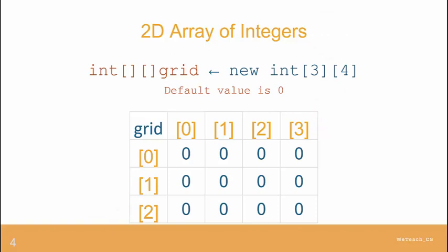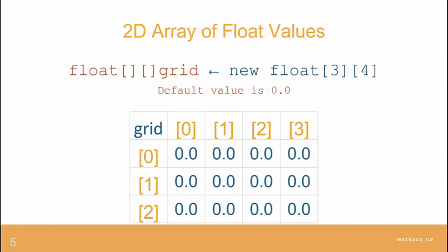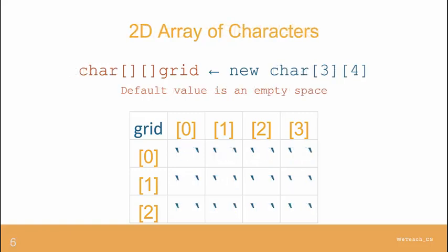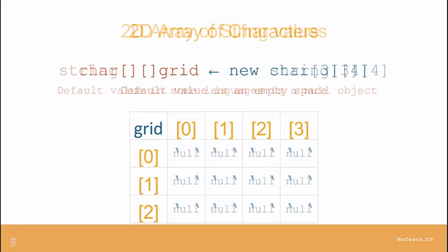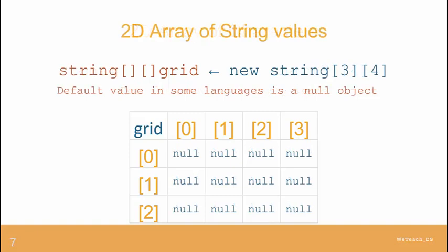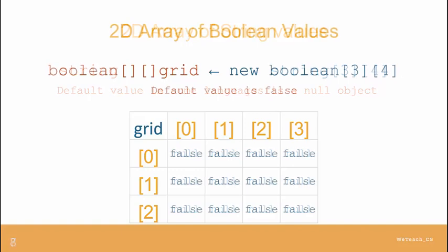Just as an array can contain other types of data, so can a two-dimensional array. Here are some examples containing floats, with 0.0 as the default value, or characters, with an empty space as the default. Here is one with strings, which in some languages initially contains the default value null, which simply means nothing. And then here is a boolean array, which by default contains the value false.